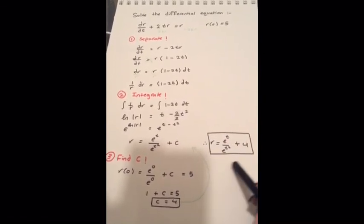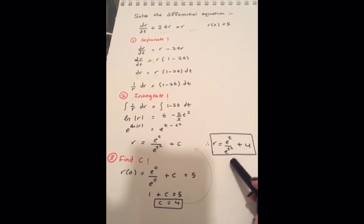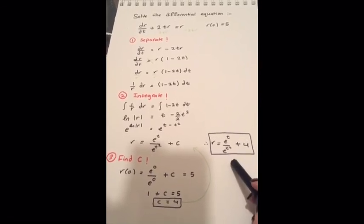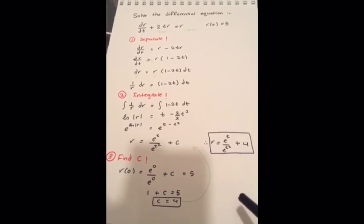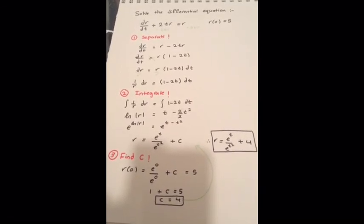We substitute c back into our equation, and the result is r equals e to the t over (e to the t squared plus 4). Hope that was helpful — thank you very much.